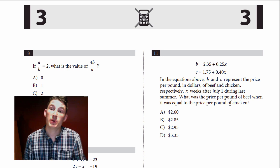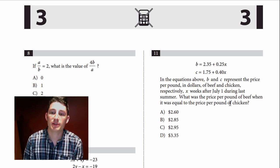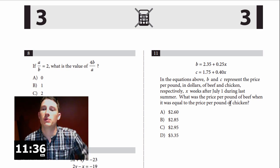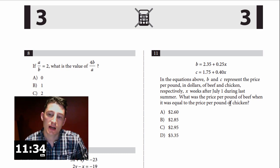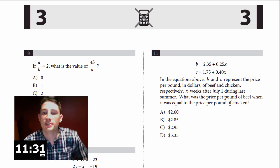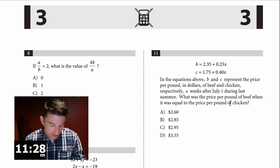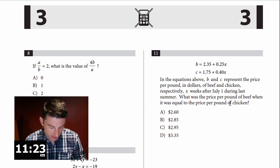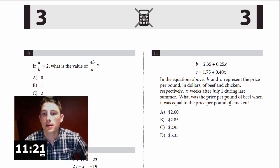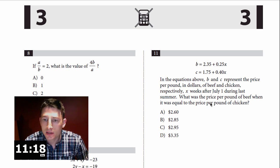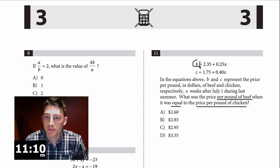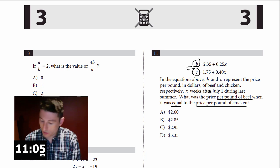Hey, this is Brian with Radical Prep. We're continuing with our full-length test at number 11. In the equation above, B and C represent the price per pound in dollars of beef and chicken respectively, X weeks after July 1st during last summer. What is the price per pound of beef when it was equal to the price per pound of chicken? So they want to know when the price of beef was equal to the price per pound of chicken. This is my beef equation and this is my chicken — we're going to set them equal.